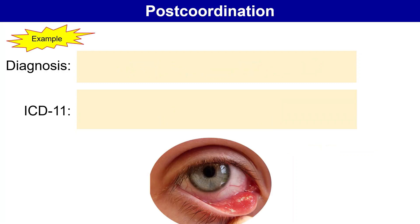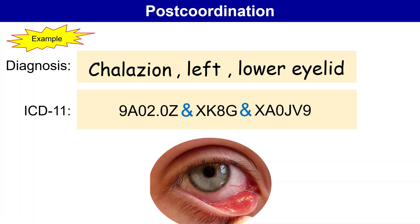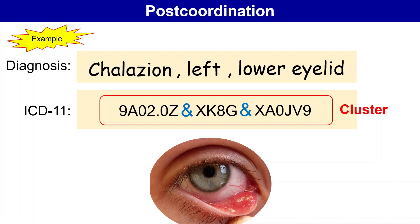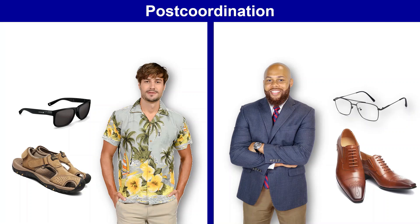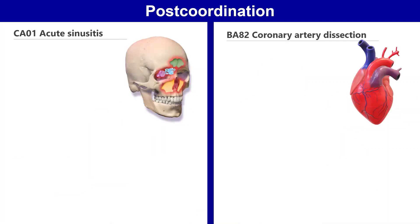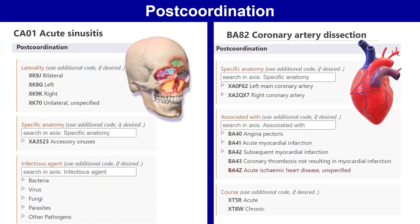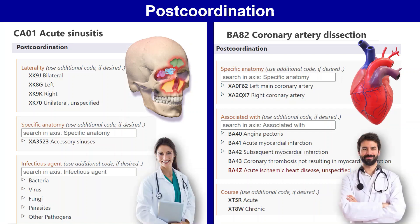For example, if we're using the coding tool to record a case of chalazion, we might like to say that it was on the left lower eyelid, and this results in one code cluster. Just like matching your accessories to your outfit, ICD-11 is smart, and the post-coordination options offered under each entity are specifically selected by the coding tool based on the condition you're coding. In other words, post-coordination axes are diagnosis-specific, and that's because ICD-11 was developed with the contribution of clinicians from different specialties.